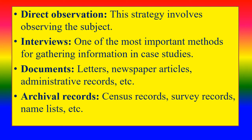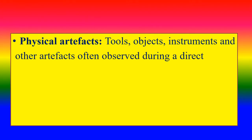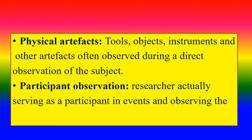Archival case study records: census records, survey records, name lists, etc. Physical artifacts: tools, objects, and instruments often observed during a direct observation of the subject. Participant observation: the researcher actually serves as a participant in events, observing the actions and outcomes.